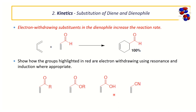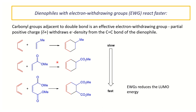Substitution on the dienophile is critically important. An electron-withdrawing group on the dienophile increases the speed of the reaction. Examples include enones and maleimide derivatives — all have electron-withdrawing groups on the dienophile, giving full conversion. A compound with only an electron-donating group reacts very slowly, while one with two electron-withdrawing groups reacts very fast.